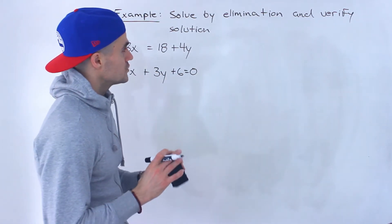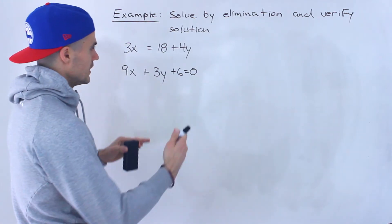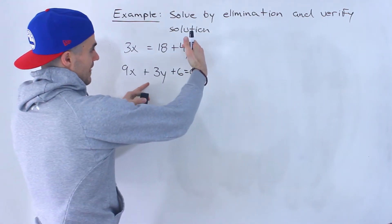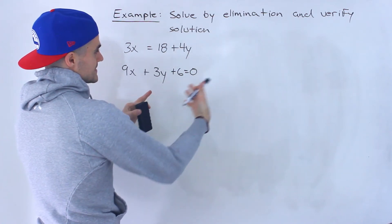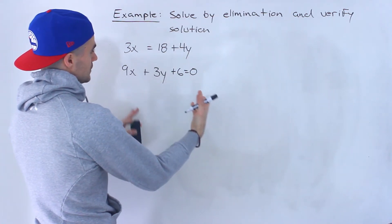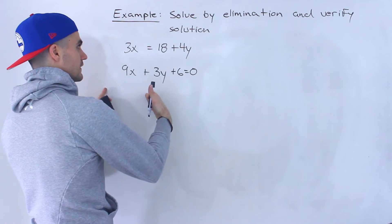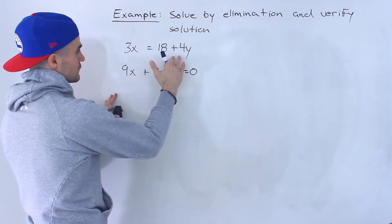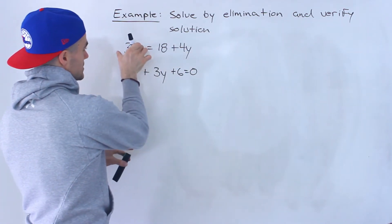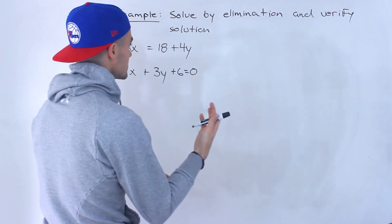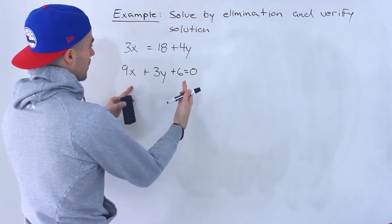Now when we're doing elimination, first thing you want to do is make sure that both lines are in the same format. So notice here for this second line, everything is on the left side versus here for this first line, it's a mix. There's some stuff on the left side, then there's some stuff on the right side. So you want to line them up properly.